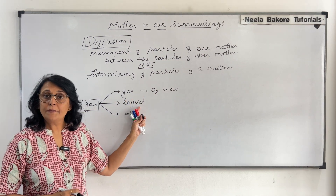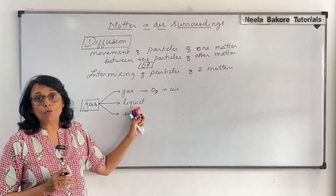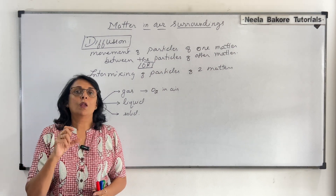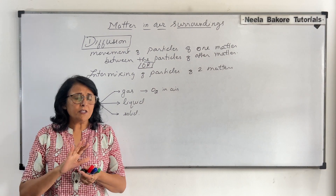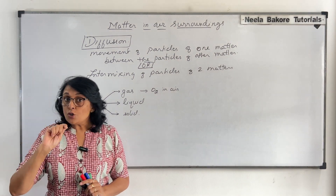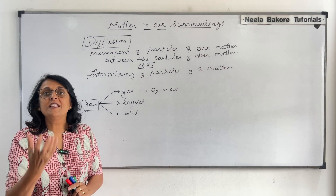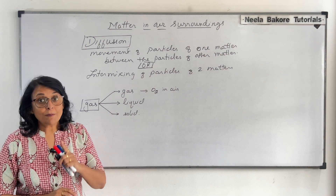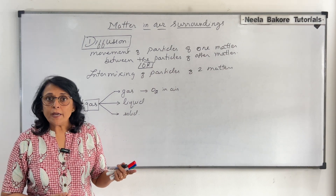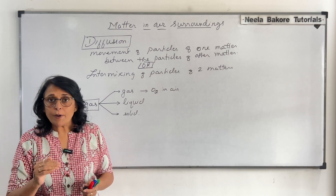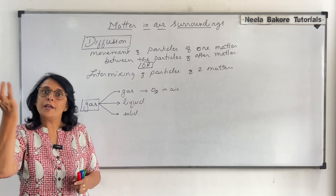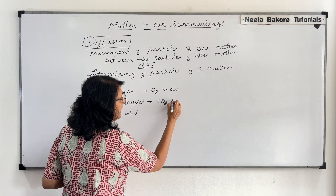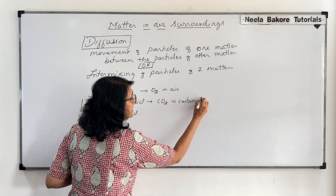Gas in liquid — a very common example we see around us: carbonated drinks. When we see a bottle of Coca-Cola or Pepsi, there is nothing visible except the liquid. As soon as you open the cap, you start seeing that fizz coming out. Fizz is nothing but bubbles, and the bubbles are of carbon dioxide. That carbon dioxide was actually in the liquid, and when you open it, the carbon dioxide escapes — that is when you see the fizz. So here: carbon dioxide in carbonated drinks.